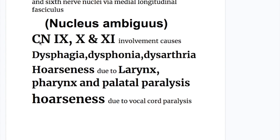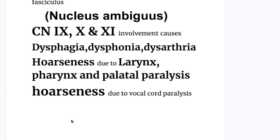The nucleus ambiguus — cranial nerves nine (glossopharyngeal), ten (vagus), and eleven (accessory) — their involvement causes dysphagia, dysphonia, dysarthria, and hoarseness due to laryngeal, pharyngeal, palatal, and vocal cord paralysis.